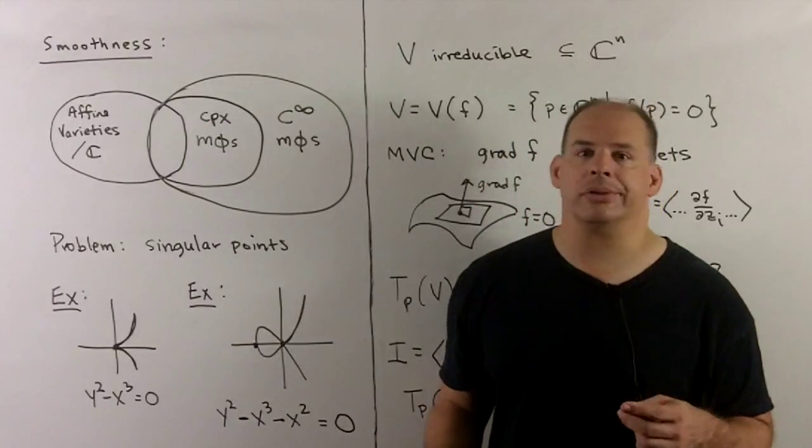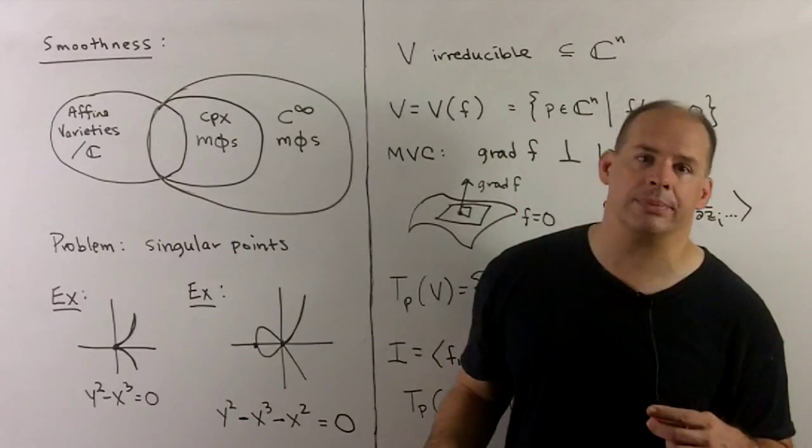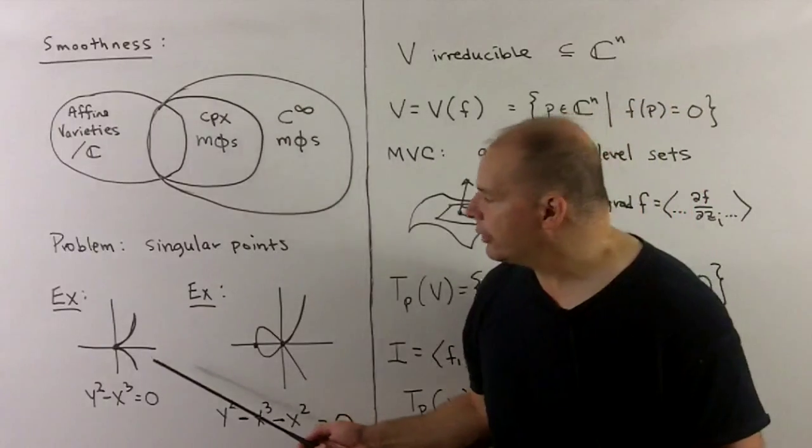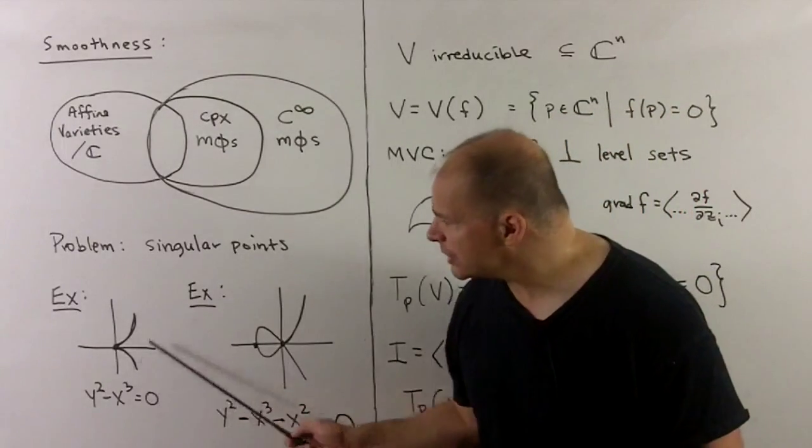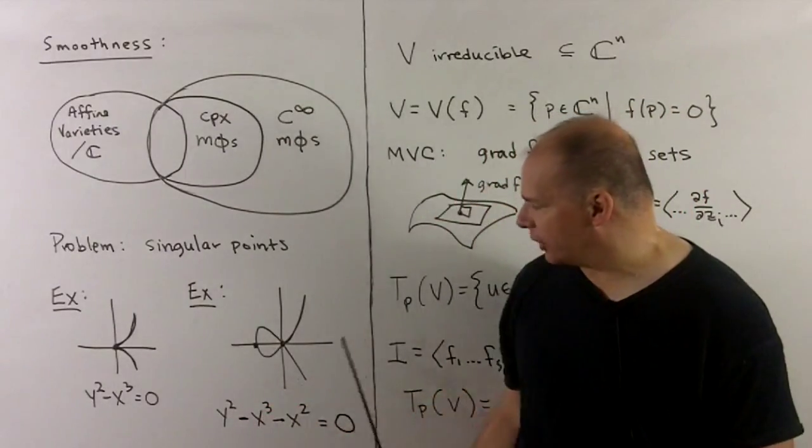For examples, if we just go to the real case, singular points show up, for instance, when we have cusps or when we have self-intersections.